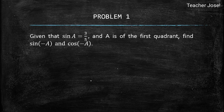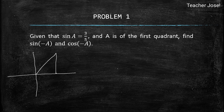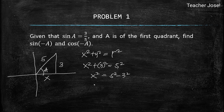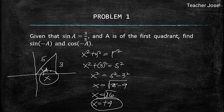Problem number 1: given that sine a is equal to 3/5 and a is in the first quadrant, find sine negative a and cosine negative a. Here's an illustration in quadrant 1. We have a, with 3 and 5. We find x using x squared plus y squared equals r squared: x squared plus 3 squared equals 5 squared, so x squared equals 25 minus 9, and x equals the square root of 16, which is positive 4, since we are in quadrant 1.